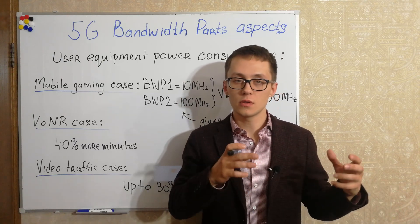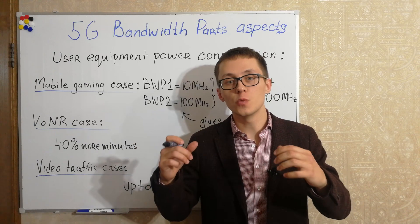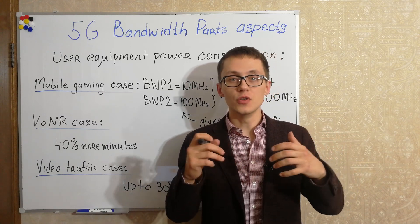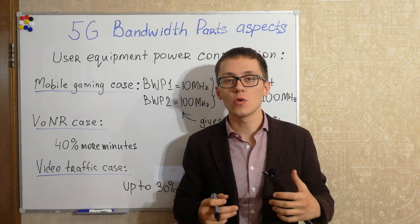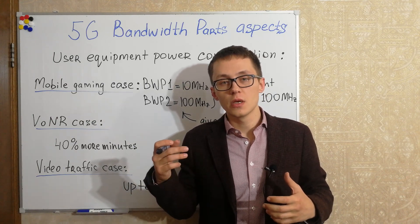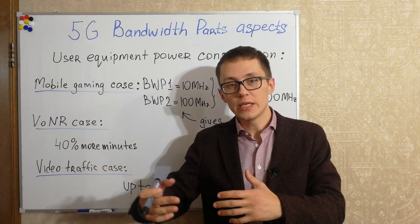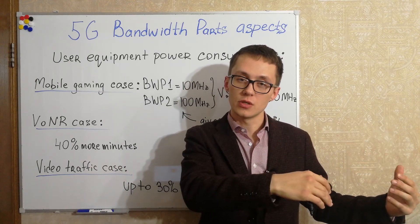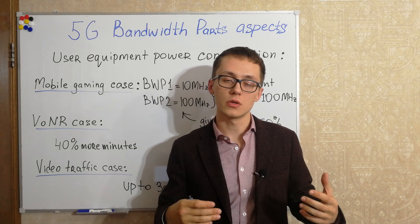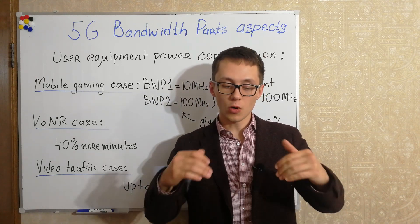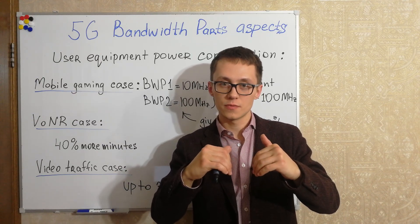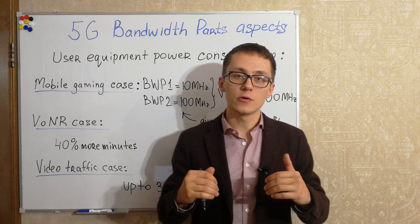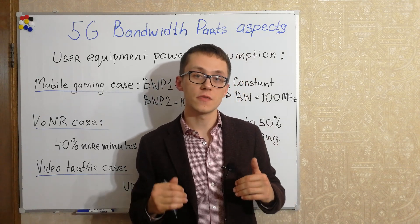There can also be a problem with interference between different bandwidth parts, sometimes called inter-numerology interference. This means that techniques must be applied to mitigate such interference — not only related to out-of-band emissions as in previous generations, but also for in-band emissions. This is a very important topic, and I've already made a video about inter-numerology interference which you can find linked here.